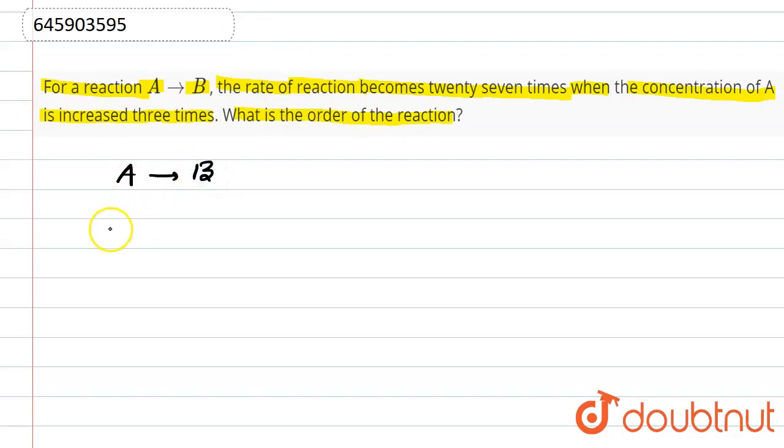So in that case, we can assume that the order of this reaction is x. We can say the rate law r is equal to k times [A] to the power x. Right now we have assumed that the order of the reaction is x.